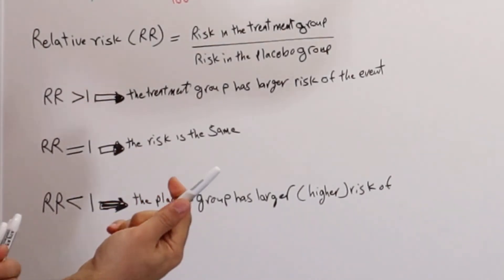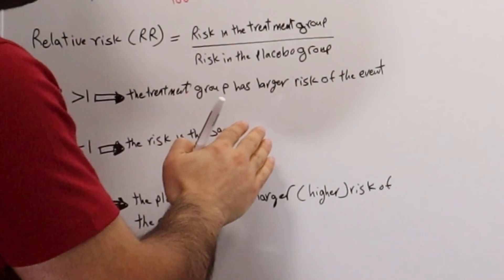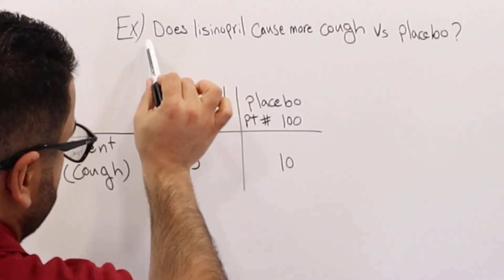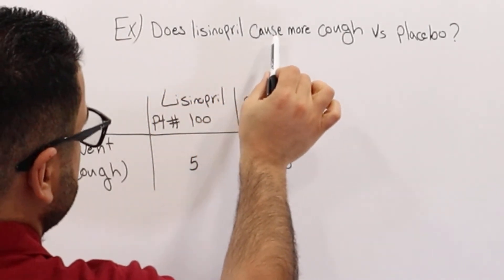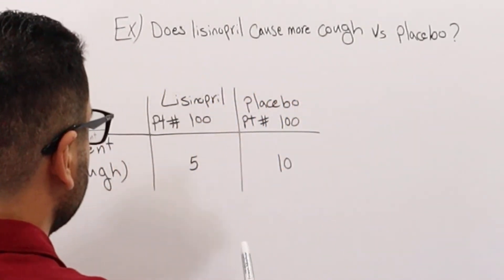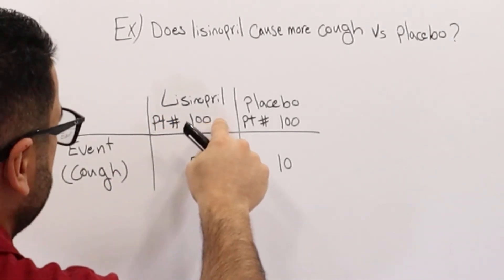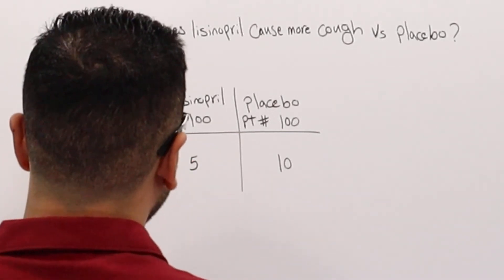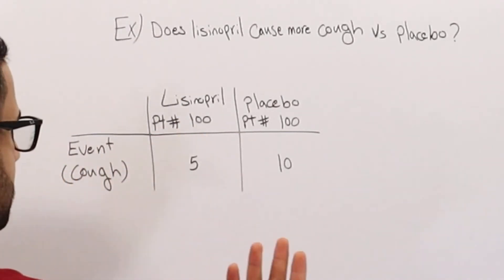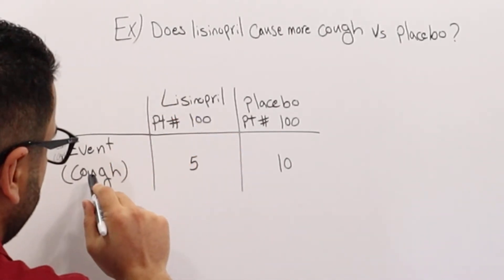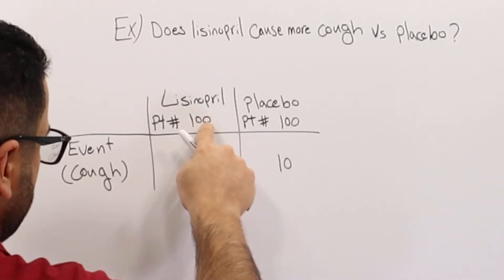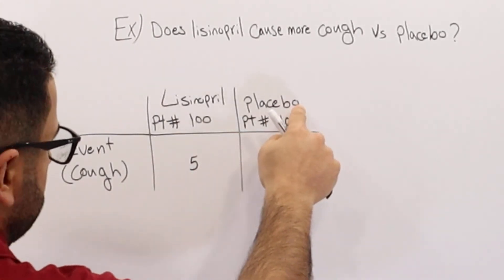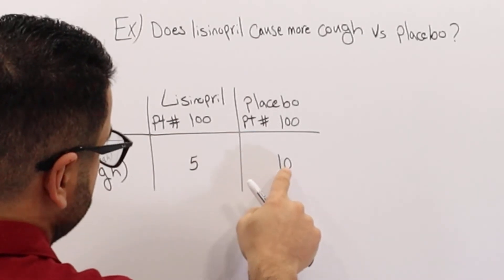Now let's take an example to better understand how risk and relative risk can be interpreted. The question asks: does lisinopril cause more cough versus placebo? I've picked easy numbers to make the concept easier to understand. Lisinopril is an ACE inhibitor, which is also known to cause cough. We have 100 patients in the lisinopril group, and 5 of them had cough. In the placebo group we have 100 patients, and 10 of them had cough.